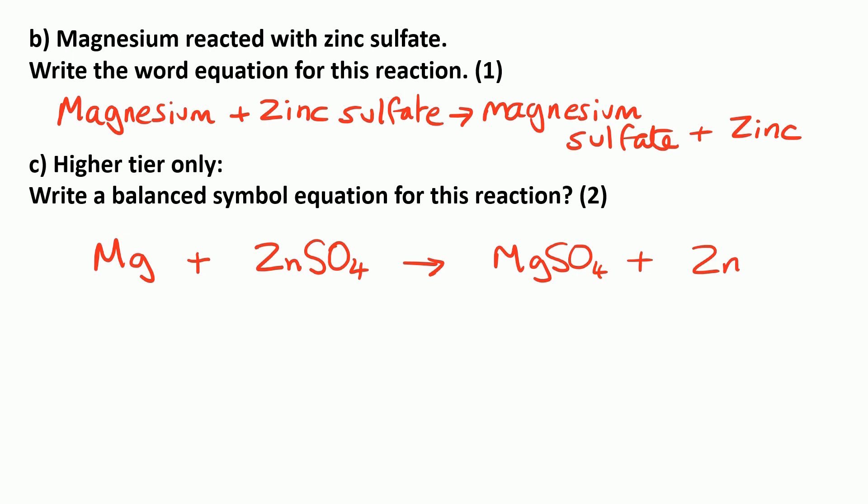MgSO4 for magnesium sulfate and Zn for zinc. And this equation is already balanced. Now if you're not sure why zinc sulfate is ZnSO4 or magnesium sulfate is MgSO4, I'll put a link up here now to a previous video explaining how we write ionic formulas.